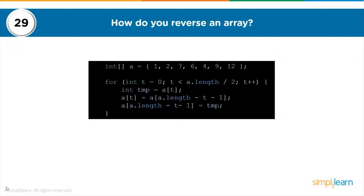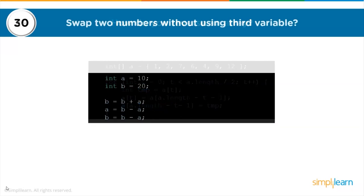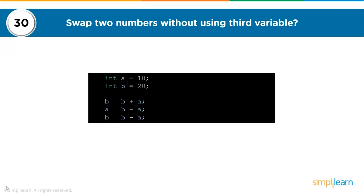The 29th question: how do you reverse an array? Loop until the half-length of the array and replace numbers corresponding to indexes from the starting to the end. The 30th question: how do you swap two numbers without a third variable? Declare two variables and initialize them. Make b the sum of both numbers, then subtract b from a so a is swapped; lastly subtract a from the sum b so b is also swapped.